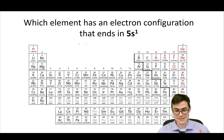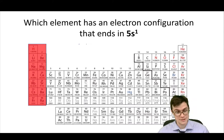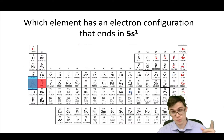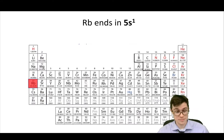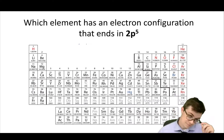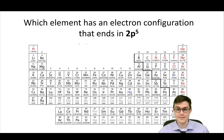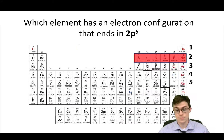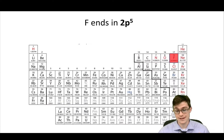Which element ends in 5S1? You look at the S-block, go down to the fifth row, and go one in — it's Rb, rubidium. Which one ends in 2P5? You go to the P-block, down to the second row, then go five in: 1, 2, 3, 4, 5. Fluorine is 2P5.